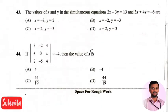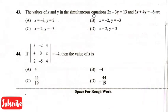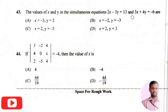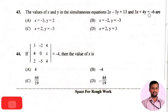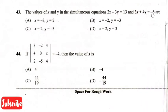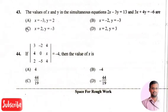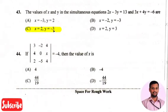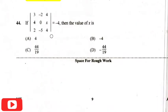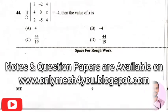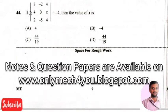The next question is the value of x and y in a simultaneous equation: two x minus three y equals thirteen and three x plus four y equals minus six. The right answer is option three, that is x equals two and y equals minus three.